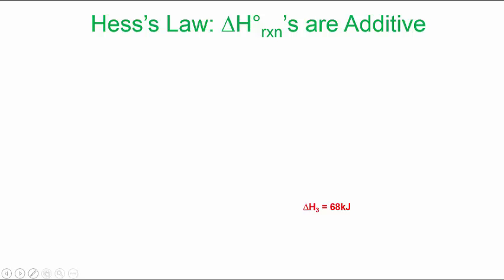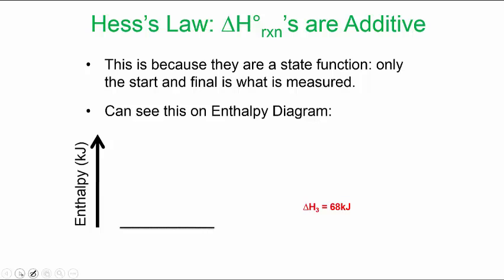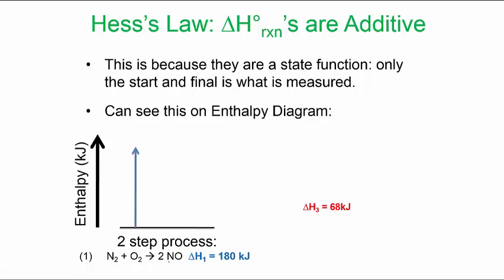So this is Hess's law that the standard enthalpy of reactions are additive. And what I said at the beginning of this tutorial was that this is possible because enthalpy is a state function. So this is best observed when you look at an enthalpy diagram. So if you have the following two reactions. Let's say you have this reaction. Nitrogen plus oxygen makes nitrogen monoxide. This happens to be really unstable. And it quickly finds another nitrogen monoxide. So this is really unstable. So this is called an intermediate.